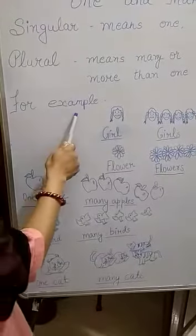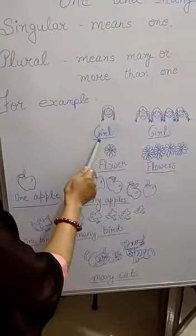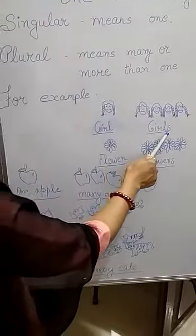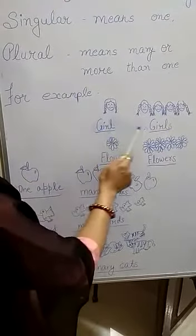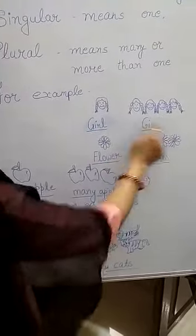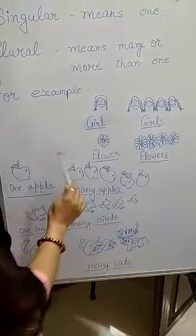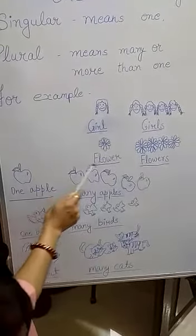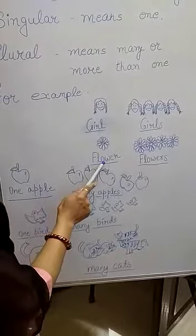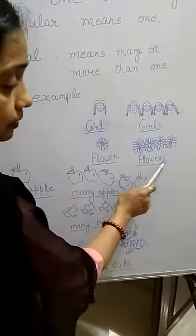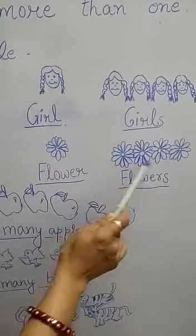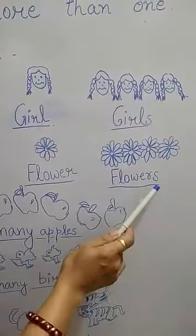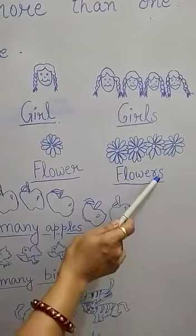For example, girl — girls. Girl means one girl, girls means more than one. My second example is flower — flowers. We have to add 's' here because here is one, two, three, four flowers. That's why we add 's' here.